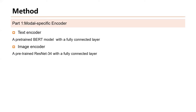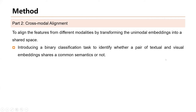In the modality-specific encoder, we represent the text and image associated with each news article by vectors. Since the modality-specific encoders are not the focus of our work, we adopt off-the-shelf techniques. Since features from different modalities may have large semantic gaps, we need to align them by transforming unimodal embeddings into a shared space. To this end, in the cross-modal alignment module, we propose to solve an auxiliary correlation learning task. Specifically, we design a binary classification task to identify whether a pair of textual and visual embeddings share common semantics.